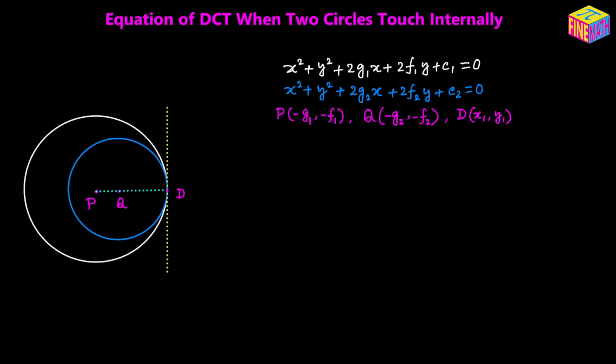From the given equation, the coordinates of P would be negative G sub 1, negative F sub 1, and the coordinates of the center of the second circle — the smaller circle Q — would be negative G sub 2, negative F sub 2. And let's assume that the coordinates of the point of contact, point D, are X sub 1 comma Y sub 1.